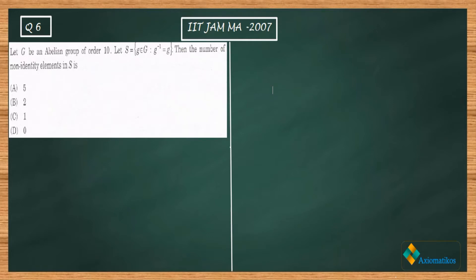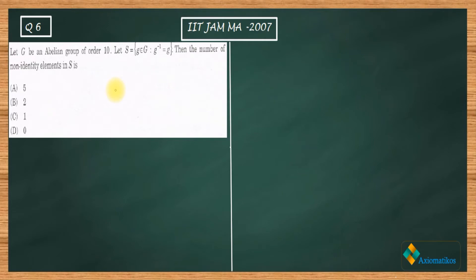This problem is from the topic abstract algebra. It says: let G be an abelian group of order 10, and S is a set that consists of all those elements from G that are self-inverse. S will consist of all those elements from G which are self-inverse. The question is asking us about the number of non-identity elements in S.